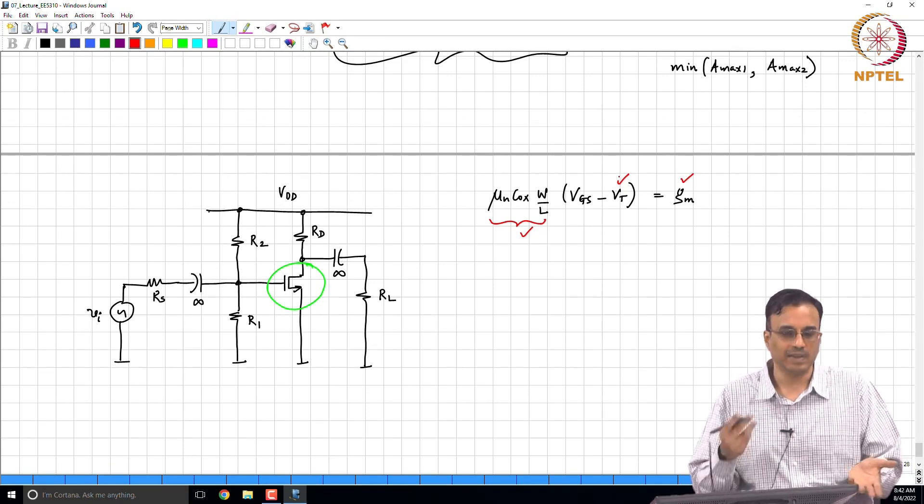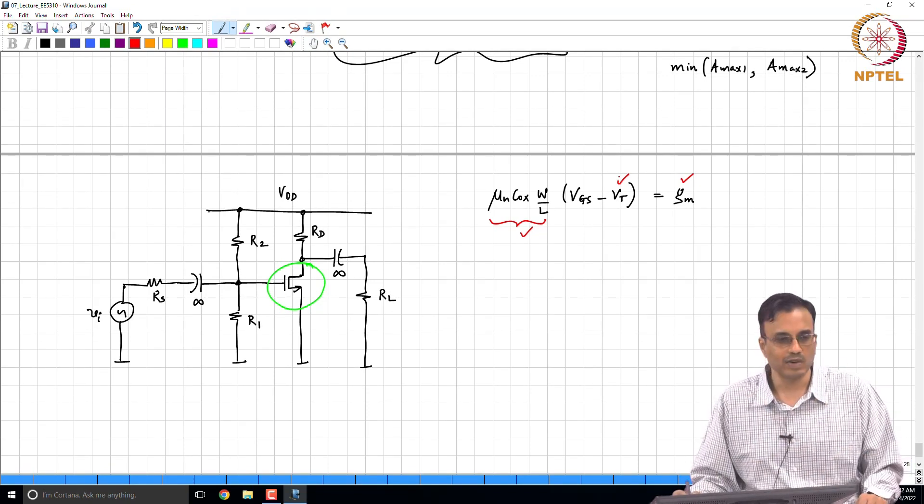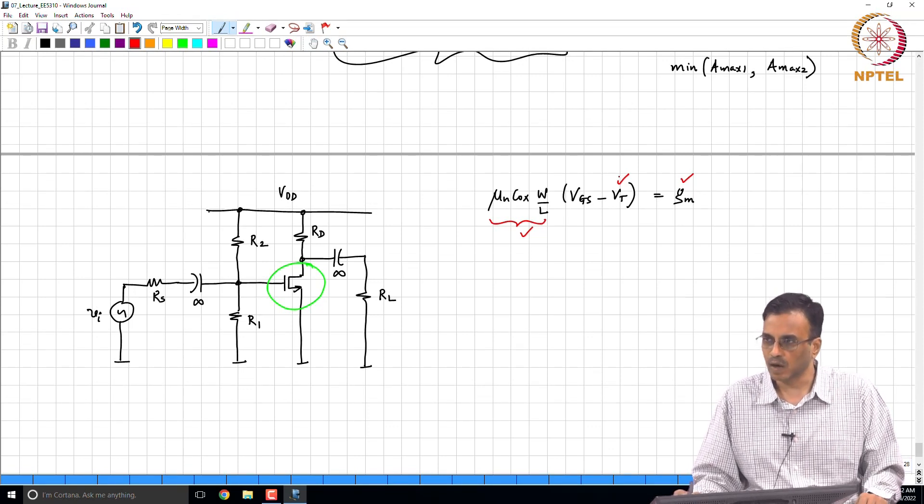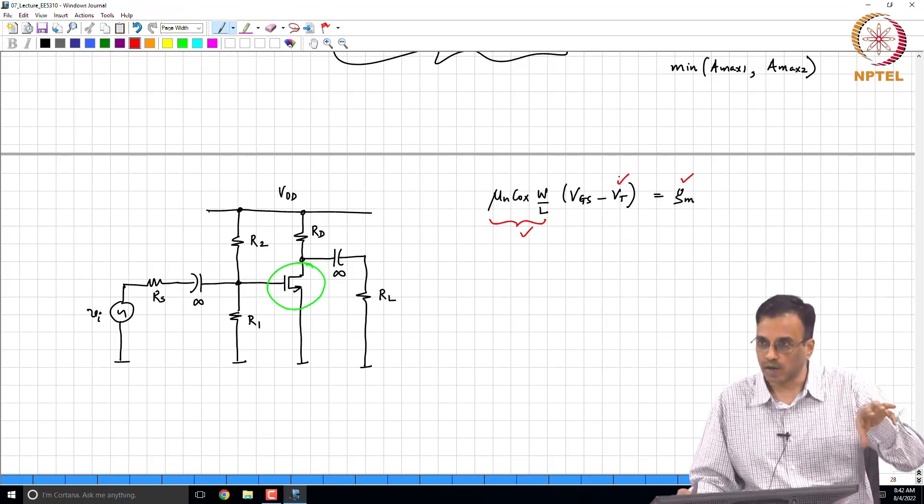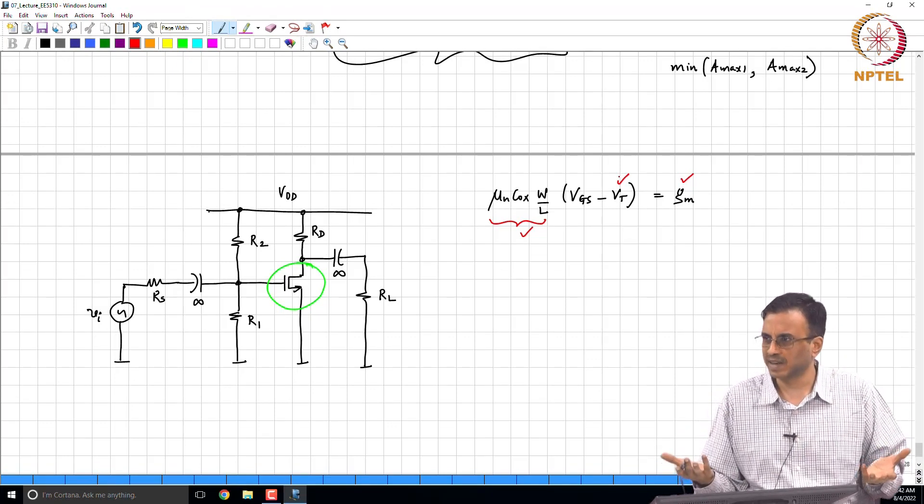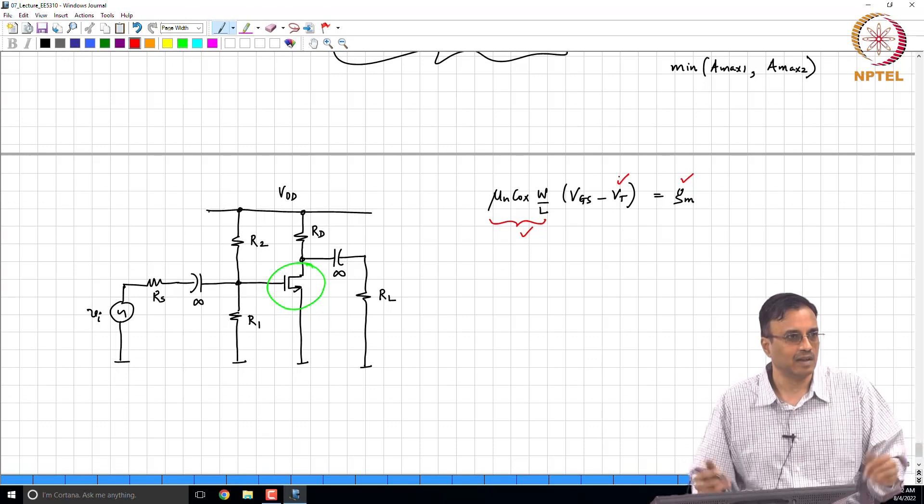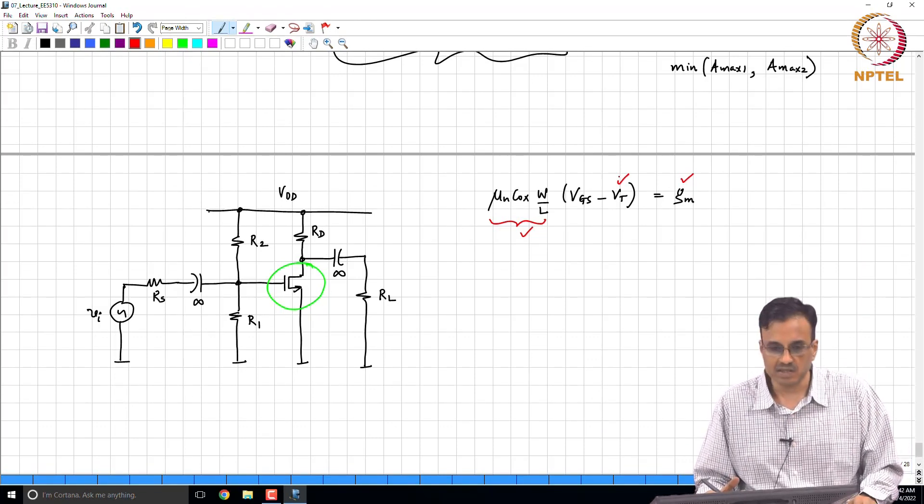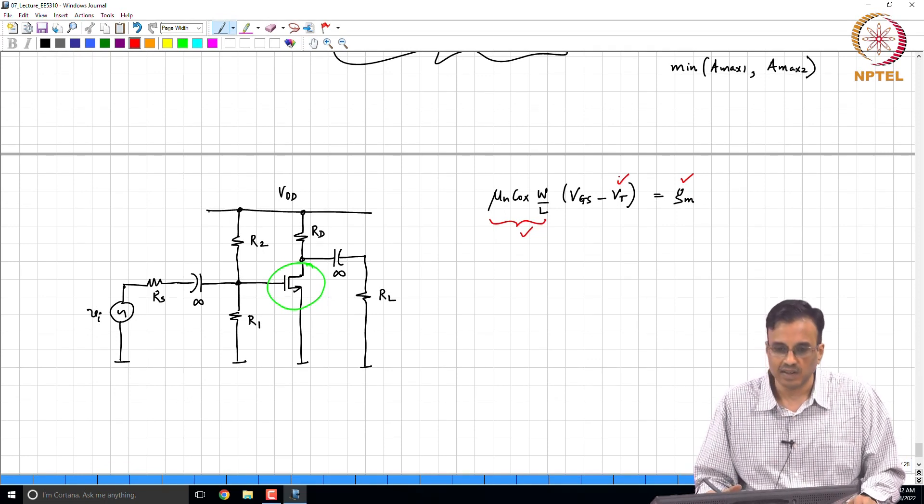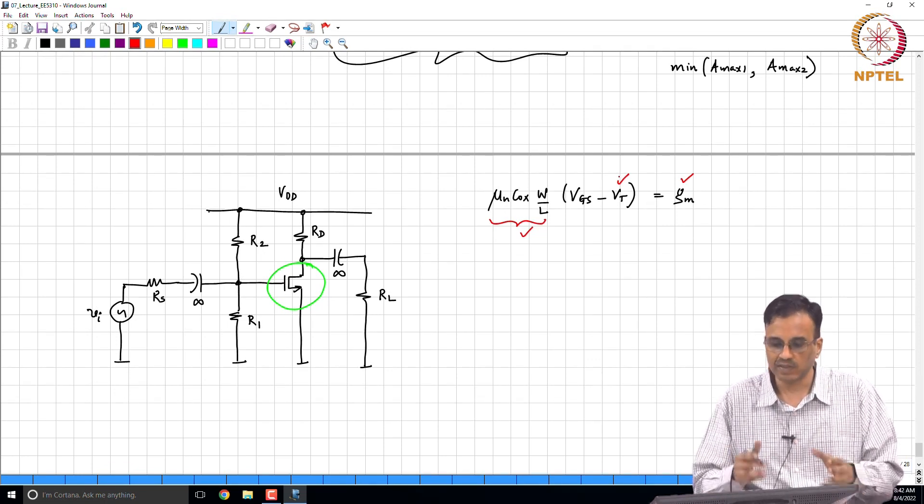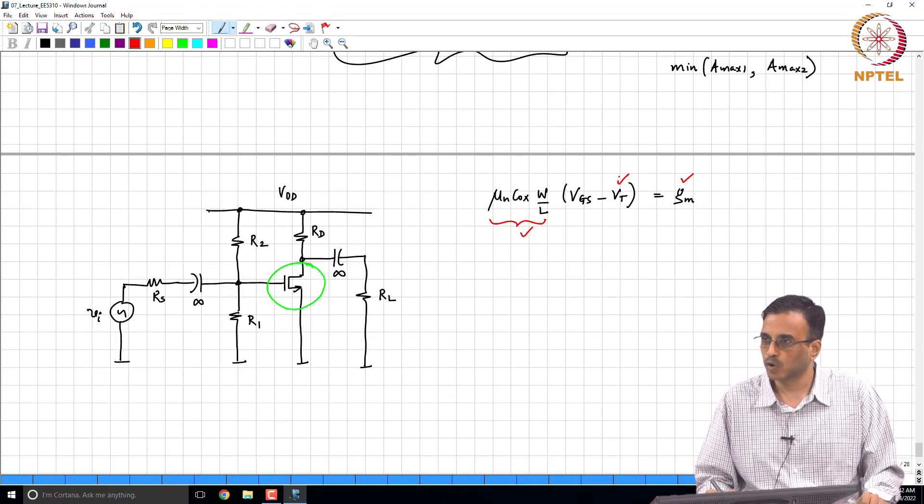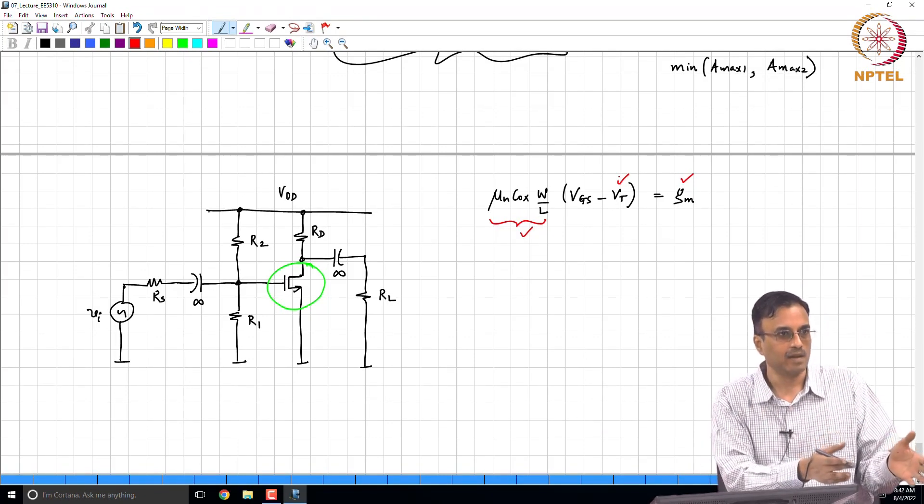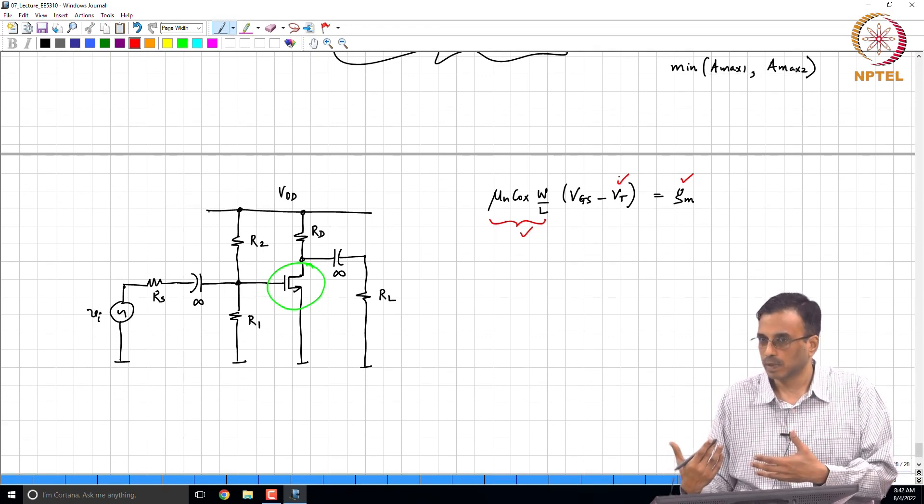From this we go and calculate V_GS that is needed to get this g_m. And once we know V_GS and we know V_DD, we go and pick - this is the reverse process. So far we basically found the incremental gain. Now we say this is the incremental gain we want. That is what you do in a real design. Nobody gives you - as engineers, it is very rare that somebody will give you a circuit and say analyze this. It is more like, I want this to happen, tell me what I should do.